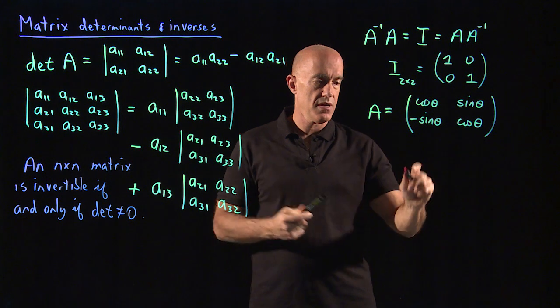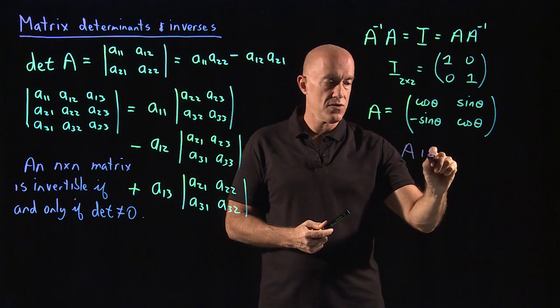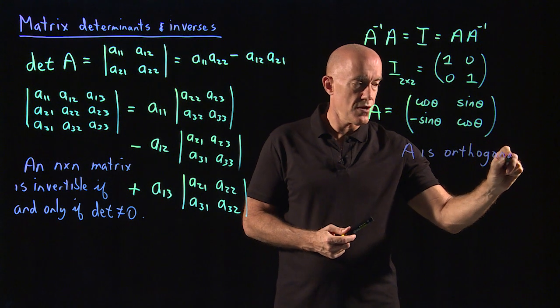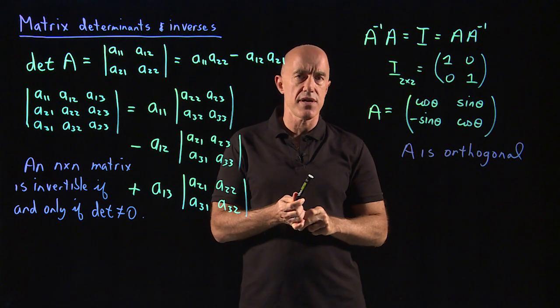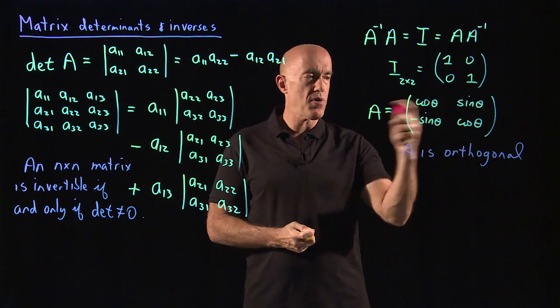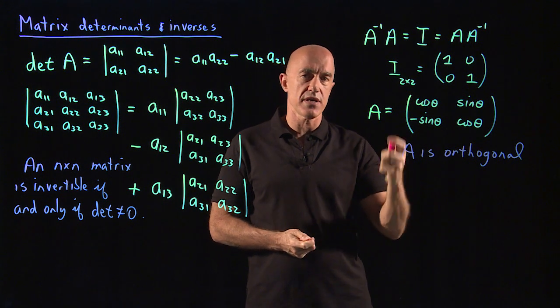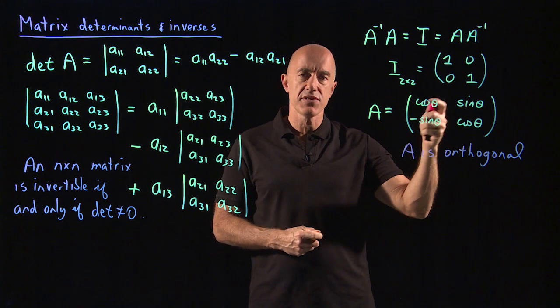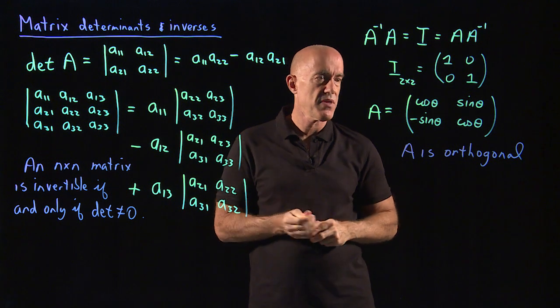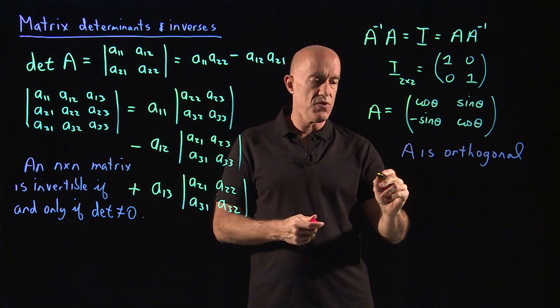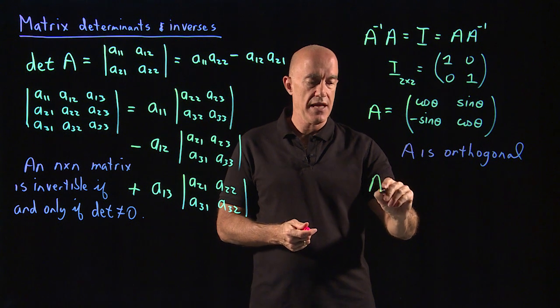Let me write the term. So A is orthogonal. So the matrices that we'll deal with for our coordinate transformations, polar coordinates, cylindrical coordinates, spherical coordinates, will be the transformation matrices will be orthogonal matrices, so that we can invert the transformation using the inverse matrix.